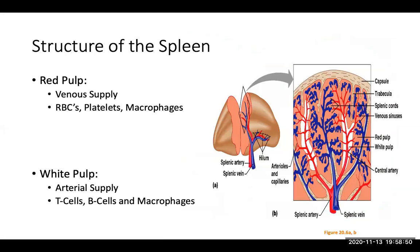The spleen is made up of red pulp and white pulp. The splenic artery and splenic vein bring blood into the spleen and drain it into the hilum. The red pulp is the venous supply where your red blood cells, platelets, and macrophages will be. The white pulp is the arterial supply where your T cells, B cells, and macrophages will be.